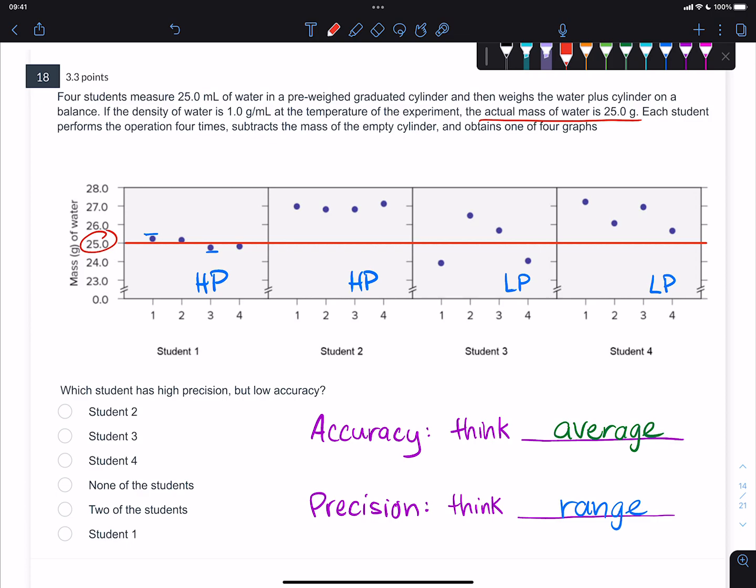Looking at the first one, if you look at the average, you can eyeball it and see that this is actually pretty high accuracy. So the first one is highly accurate and highly precise. The second one is highly precise because the range of their values is small, but the average of their values is just way off, so this is low accuracy.